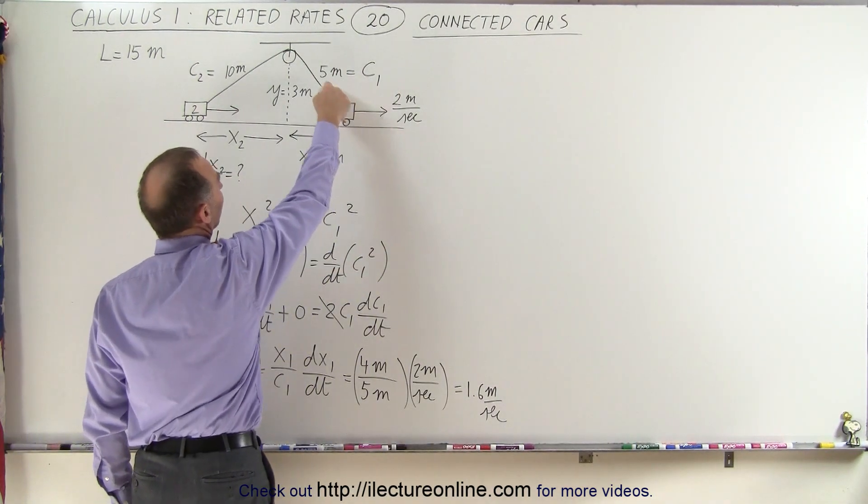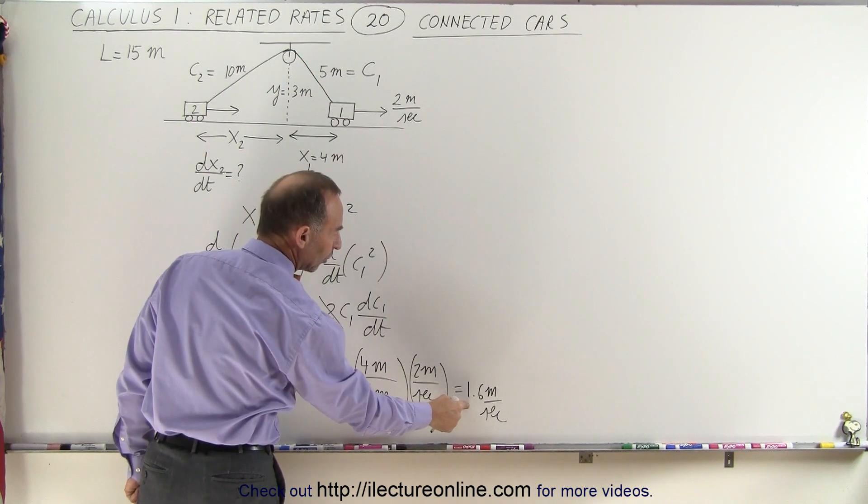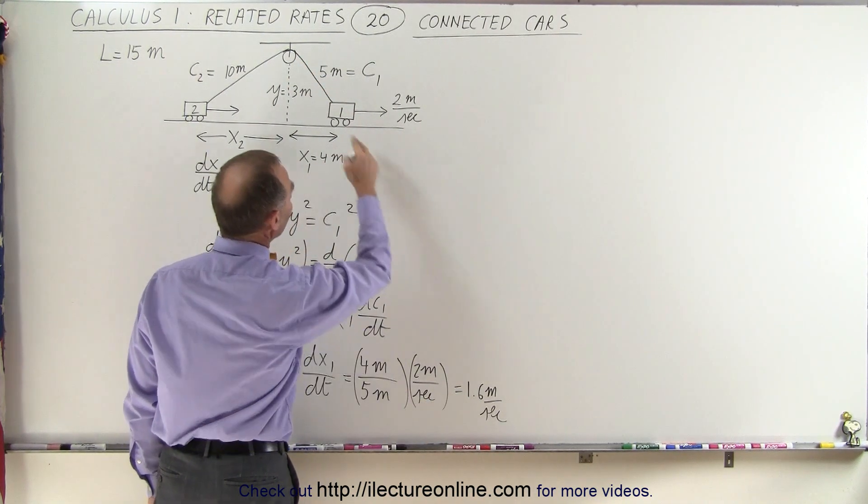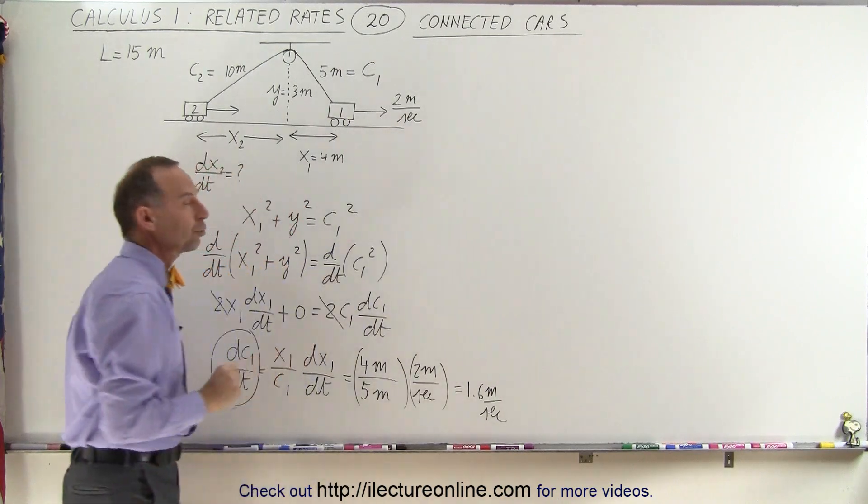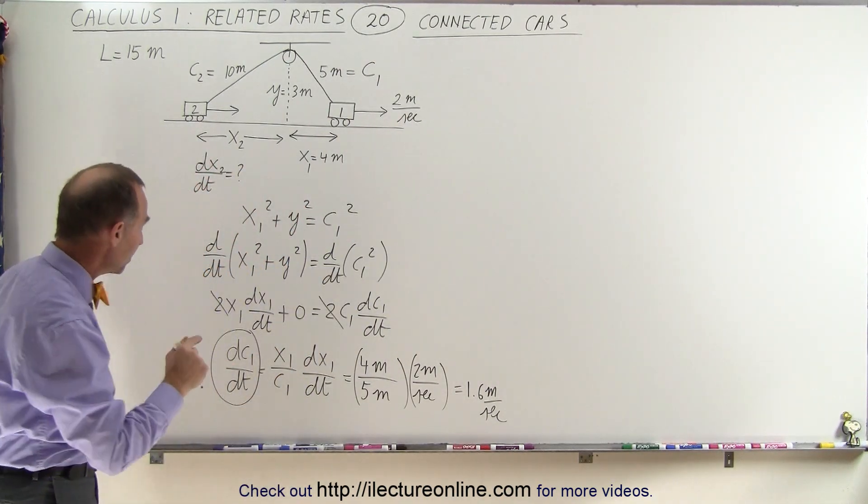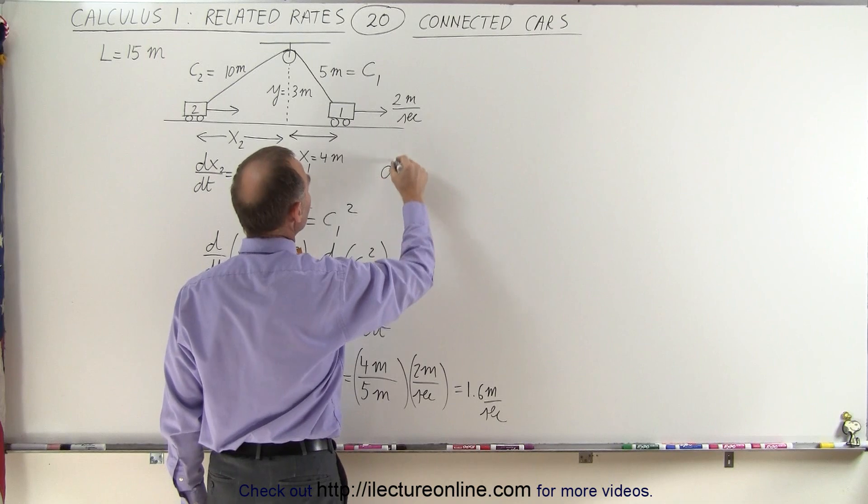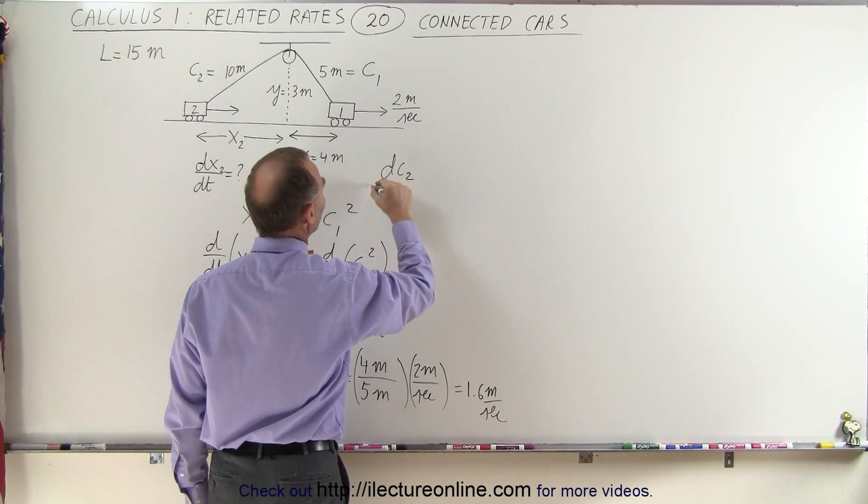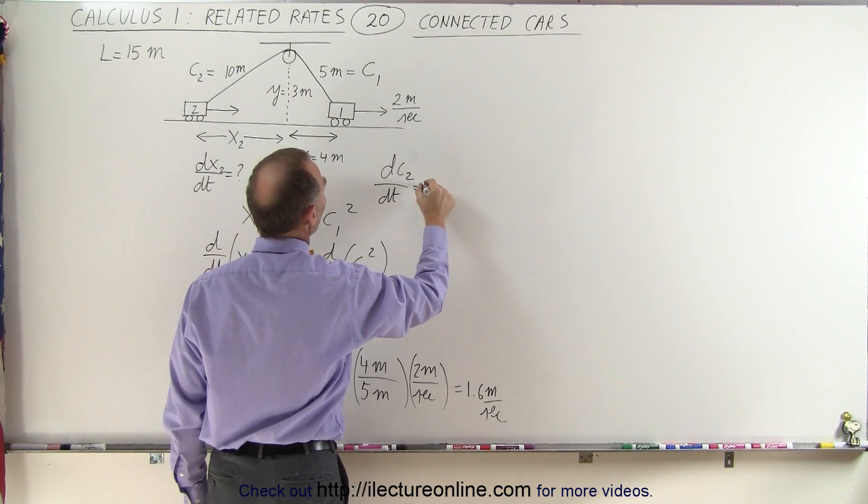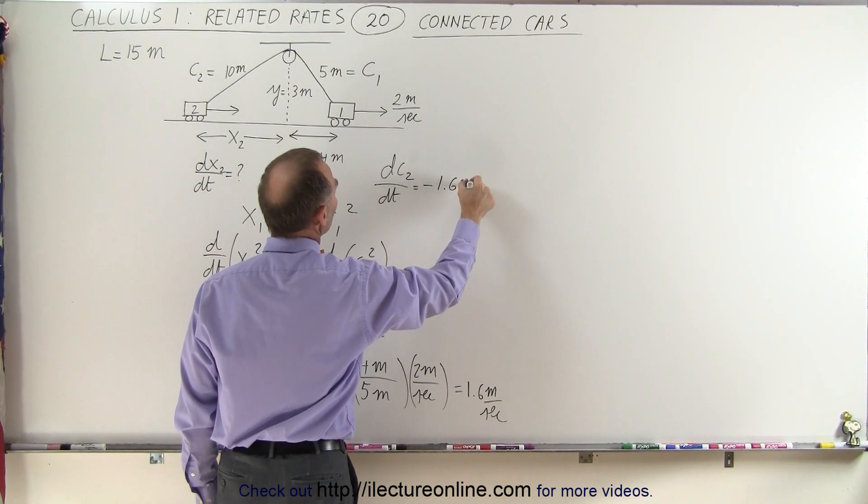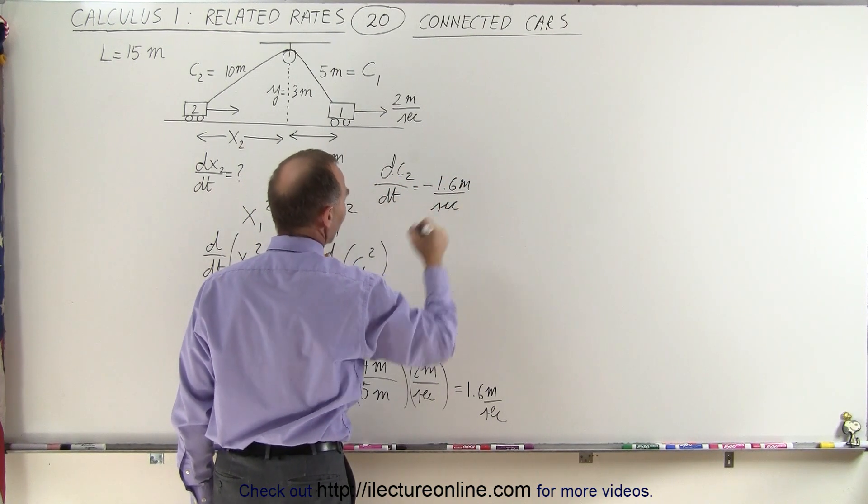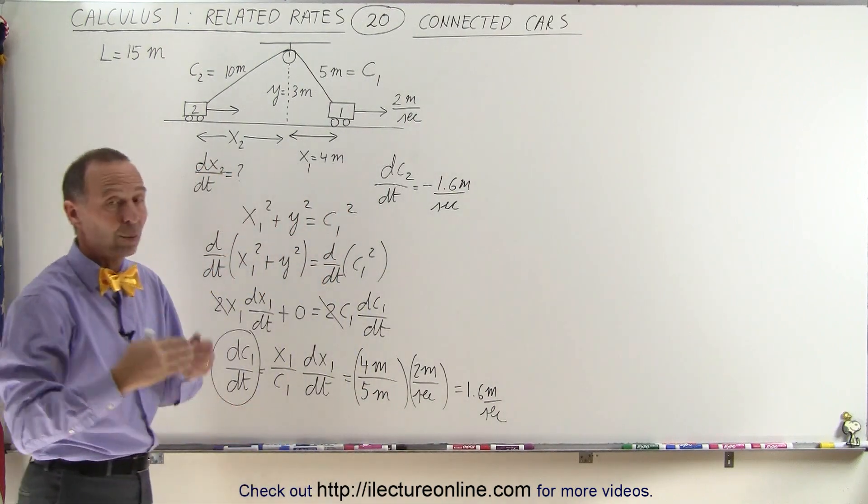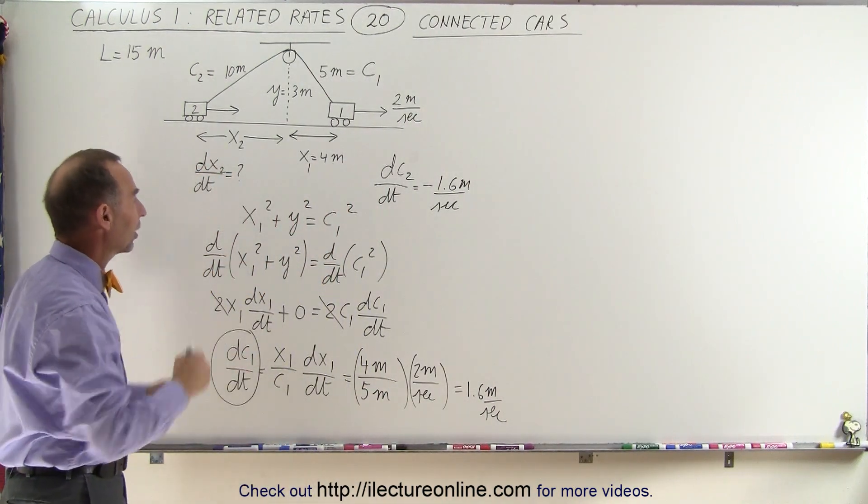So that means that c1 is changing by 1.6 meters per second as car one is moving to the right at 2 meters per second. Which means that dc2 dt will be equal to a minus 1.6 meters per second at the very same time. Remember as c1 is getting larger c2 is getting smaller.